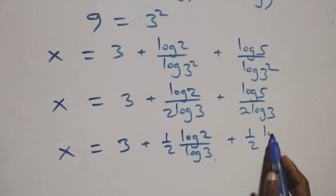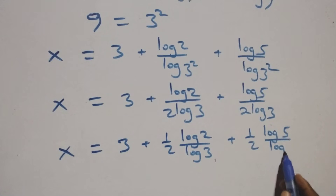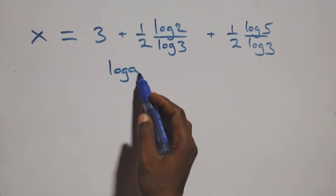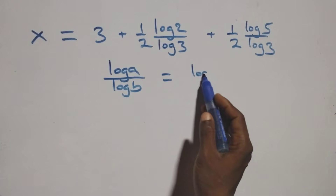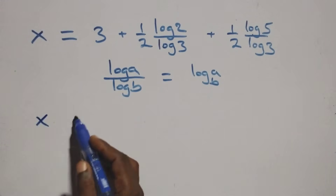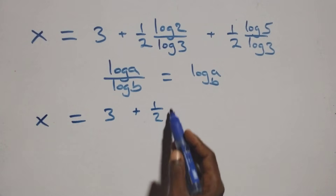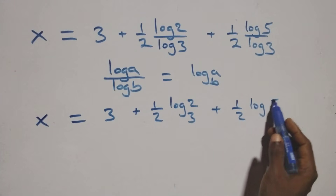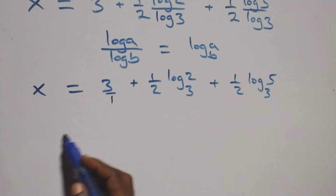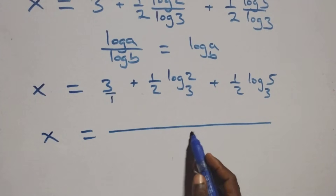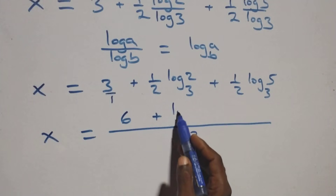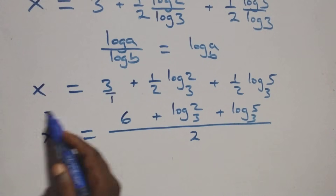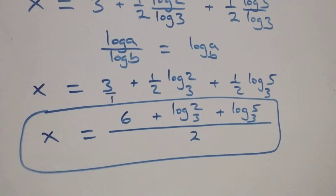Separating the fractions: x equals three plus one-half times log two over log three plus one-half times log five over log three. We apply the change of base formula: log a over log b is the same as log a to base b. So x equals three plus one-half log base three of two plus one-half log base three of five. Bringing this together over a common fraction: x equals six plus log base three of two plus log base three of five, all over two.